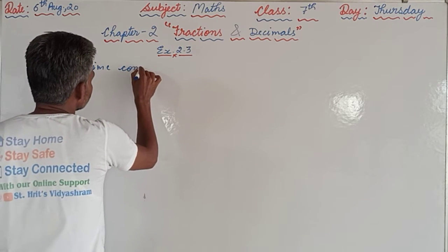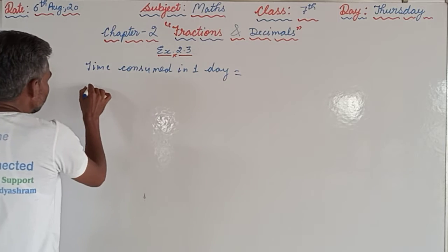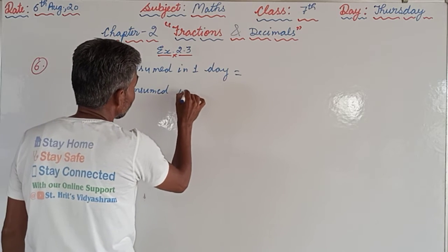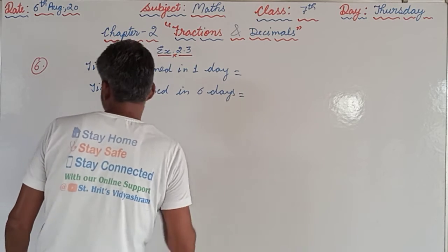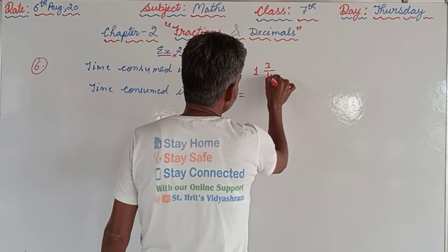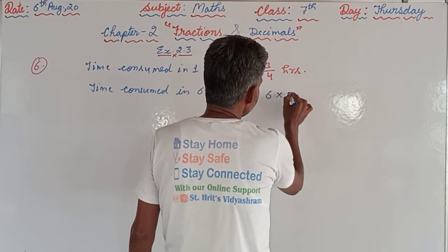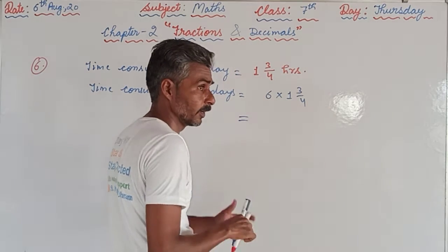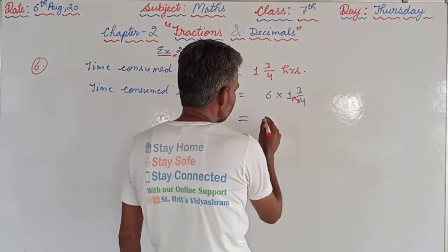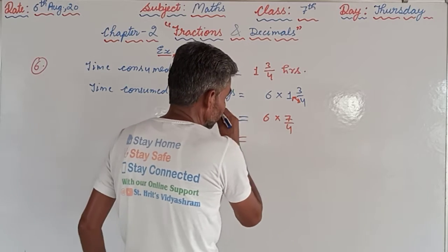Time consumed in one day is given, and we need to find the time consumed over six days. Per day she was giving one and three-fourths hours, and for six days she will give more — so we have to multiply. This is a mixed fraction, so first we will convert it into an improper fraction: four times one is four, four plus three is seven, so it becomes seven by four.